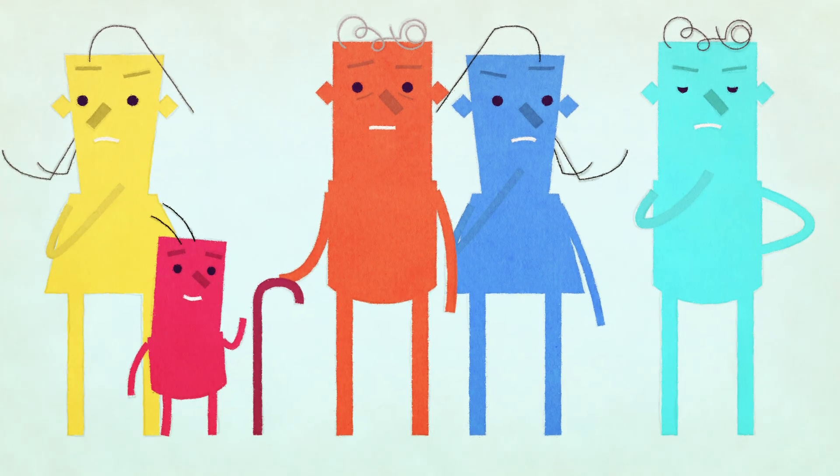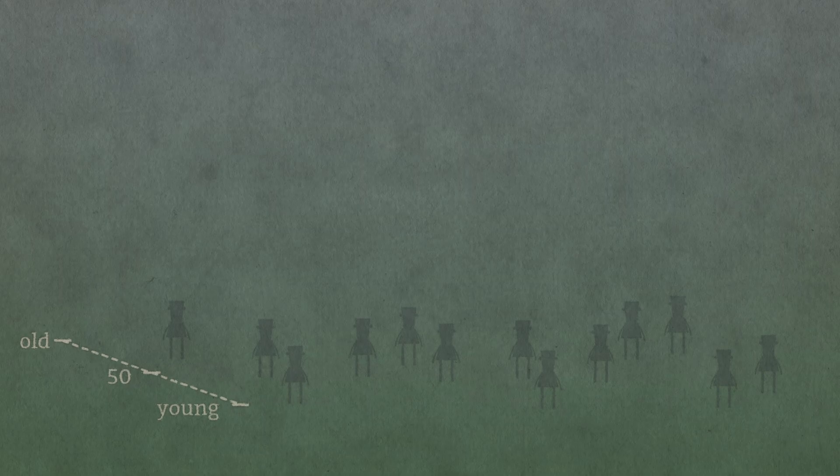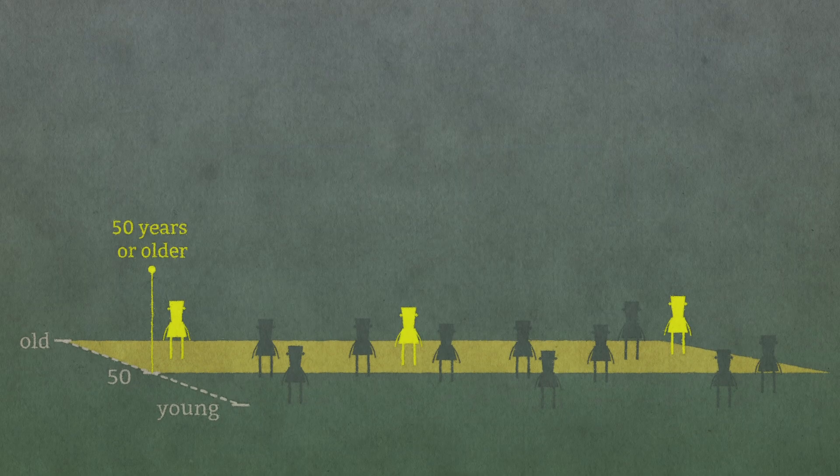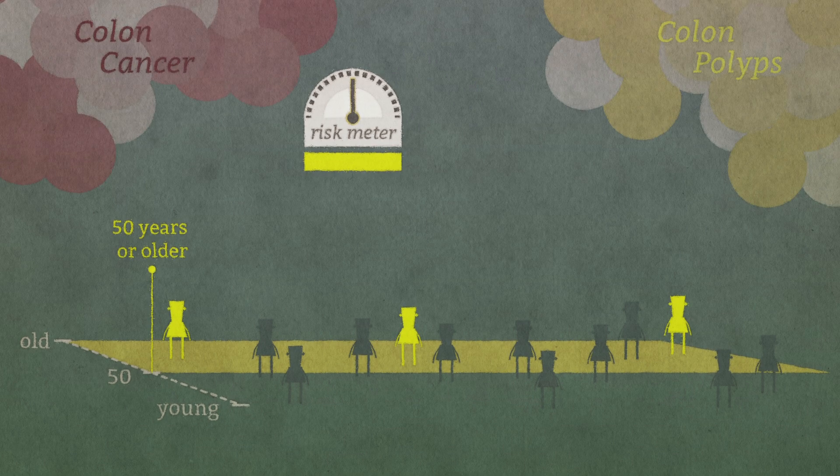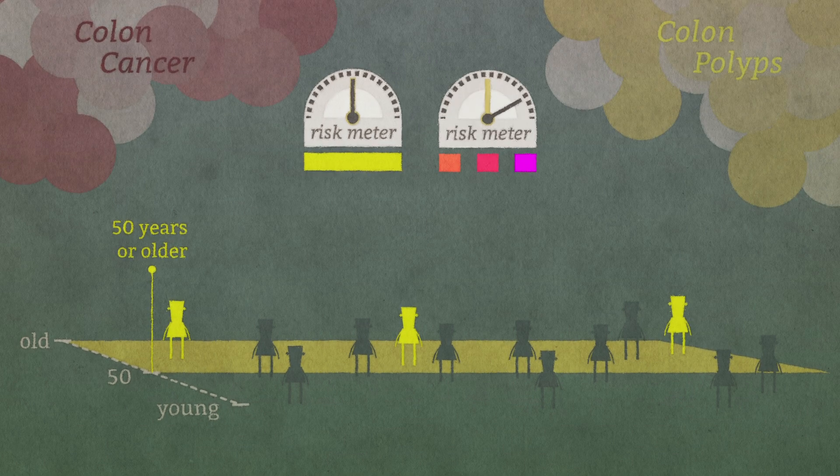So who's at risk? Most cases occur in people aged 50 years or older. This group is considered at average risk for colon cancer or colon polyps.